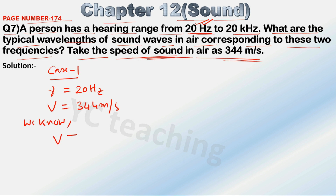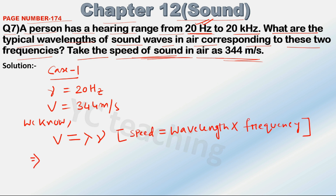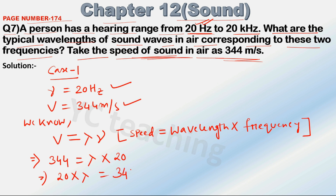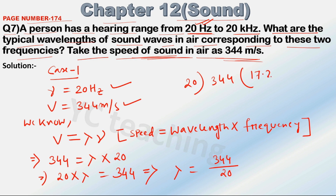We know v is equal to lambda times nu — that is, speed equals wavelength into frequency. So, v = 344, and there is no value of lambda, so it will be lambda into nu, where nu equals 20. So it will be 20 into lambda equals 344, which gives lambda equals 344 divided by 20. When we divide, we get 17.2.